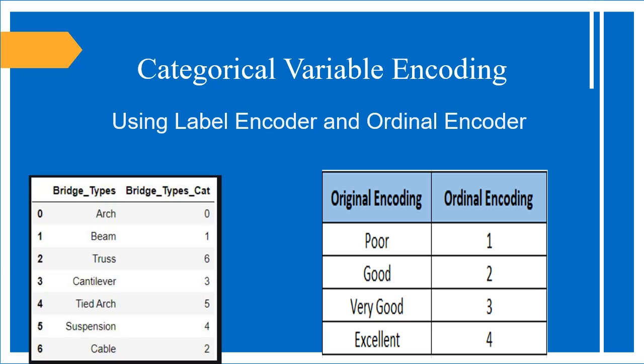We apply label encoder on nominal columns — like bridge type, as you can see in the left table. On the right-side table we apply ordinal encoding, because those columns have values we can measure. In the left-side case, the values cannot be measured — for example with colors like red, white, blue, you cannot define which color is greater than which.